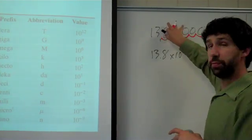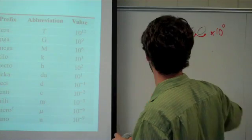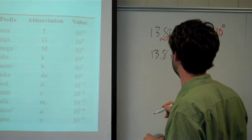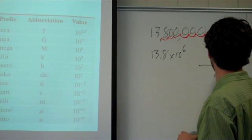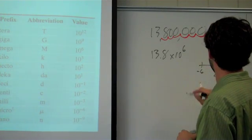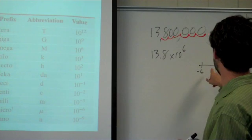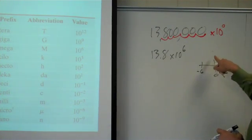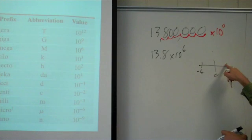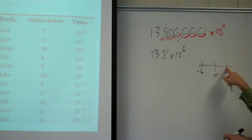And we're going to have times 10 to the something. Well, it's a really big number, so that means we should have a positive exponent. So this should be times 10 to the sixth. Once again, you can see that on the number line. Because if we go to the left with our decimal, we go to the right on the number line. So we went from zero to six.